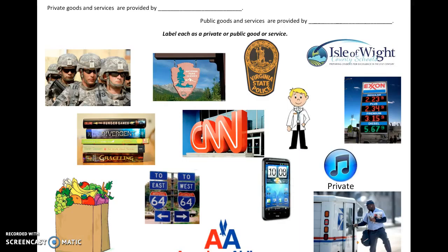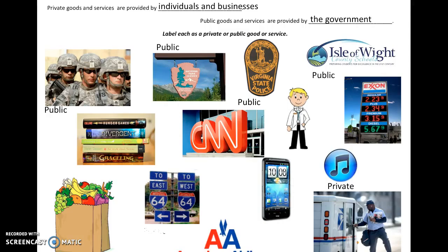Private goods and services are provided by individuals and businesses; public goods and services are provided by the government. Let's label the public ones first: the US military is public, national parks are public, Virginia State Police are public, schools are public, highways and interstates are public, and the postal service in the bottom right corner is a public good or service.